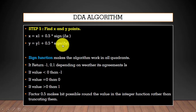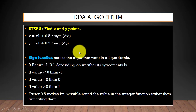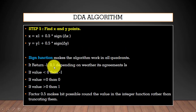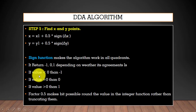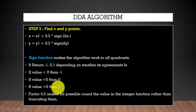In step 5 we have to find the point X and Y. Using these equations we can find X and Y. There is a sign function applied to the value of Delta X, and the sign function makes the algorithm work in all quadrants. It returns minus 1, 0, or 1: if Delta X or Delta Y is less than 0, it returns minus 1; if equal to 0, it returns 0; if greater than 0, it returns 1.